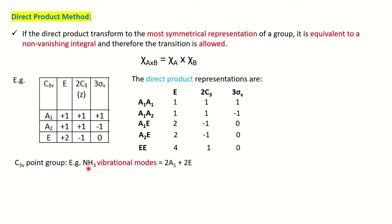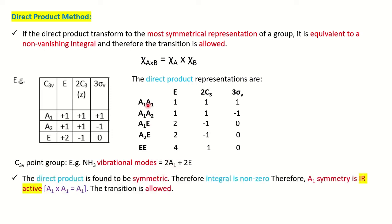Ammonia is the best example for the C3v point group. I have already covered the video on how to find normal modes of vibration for ammonia, which gives 2A1 + 2E. For ammonia, the 2A1 modes — multiplying A1 two times — give the most symmetrical representation. This is a non-zero integral, so it is an allowed transition. This vibration is IR active.